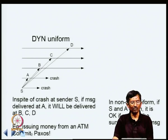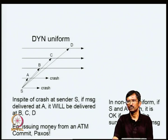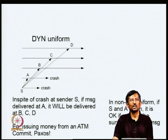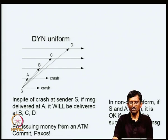So, in spite of a crash at sender S, if the message is delivered at A, it will be delivered at B, C, D. This is the model used by commit protocols and Paxos. If somebody has committed somewhere, it does not matter if that party is no longer living — you also have to commit. Similarly in Paxos consensus, if a majority has accepted a value for a particular round as the agreed-upon value, everybody else should do it irrespective of who lives and who dies.